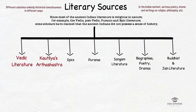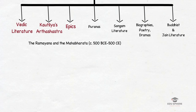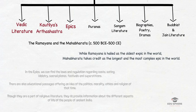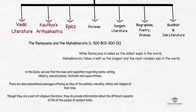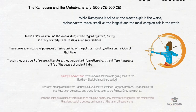Next are the epics. In India, the word epic brings to mind two very famous works — the Ramayana and the Mahabharata. The two great epics can also be used as a historical source. Amid the adventure of Hindu gods and heroes, we can find different laws and regulations regarding caste, idolatry, sacred places, festivals and superstitions. There are also educational passages offering insight into the politics, morality, ethics and religion of that time. Though they are a part of religious literature, they do provide information about different aspects of life in ancient India.